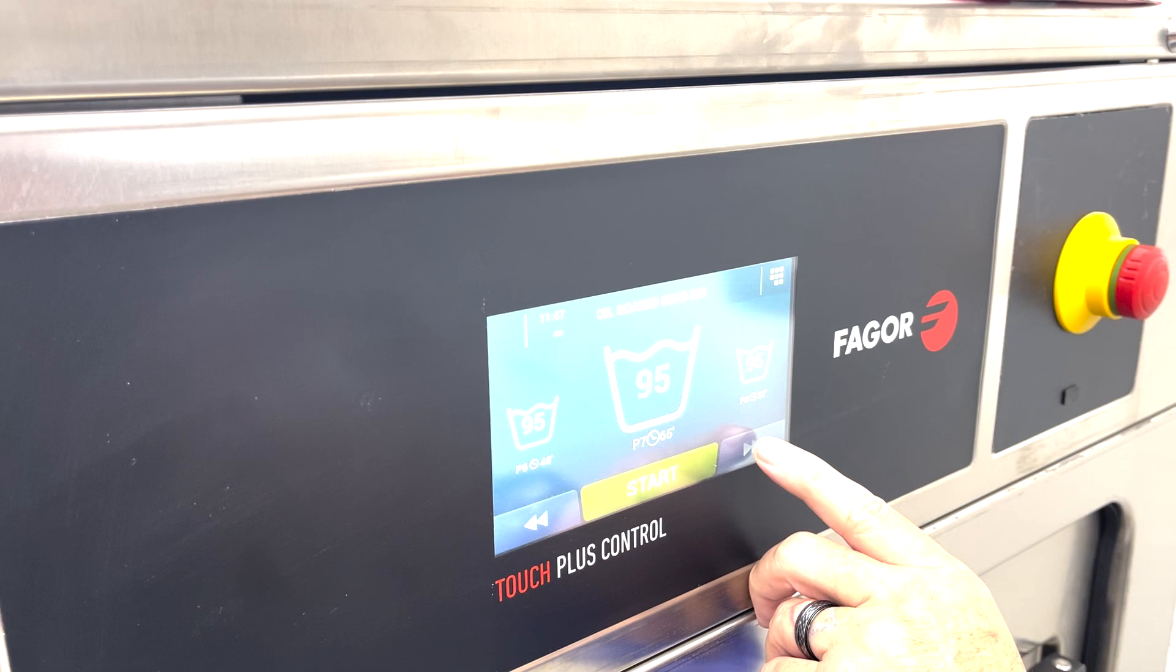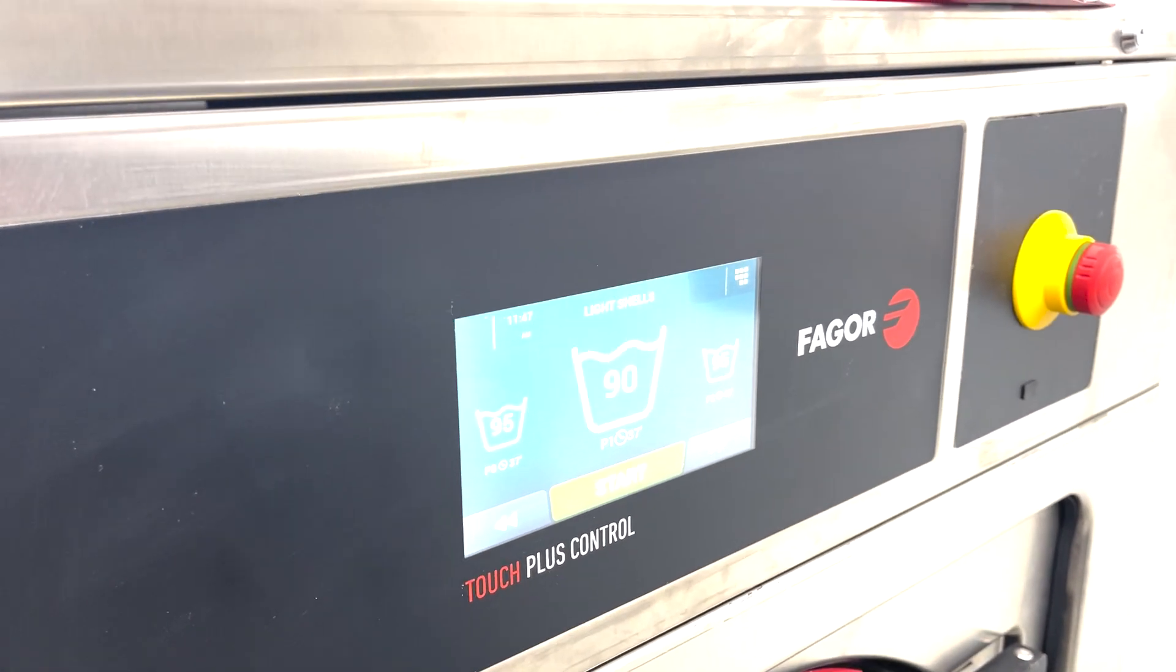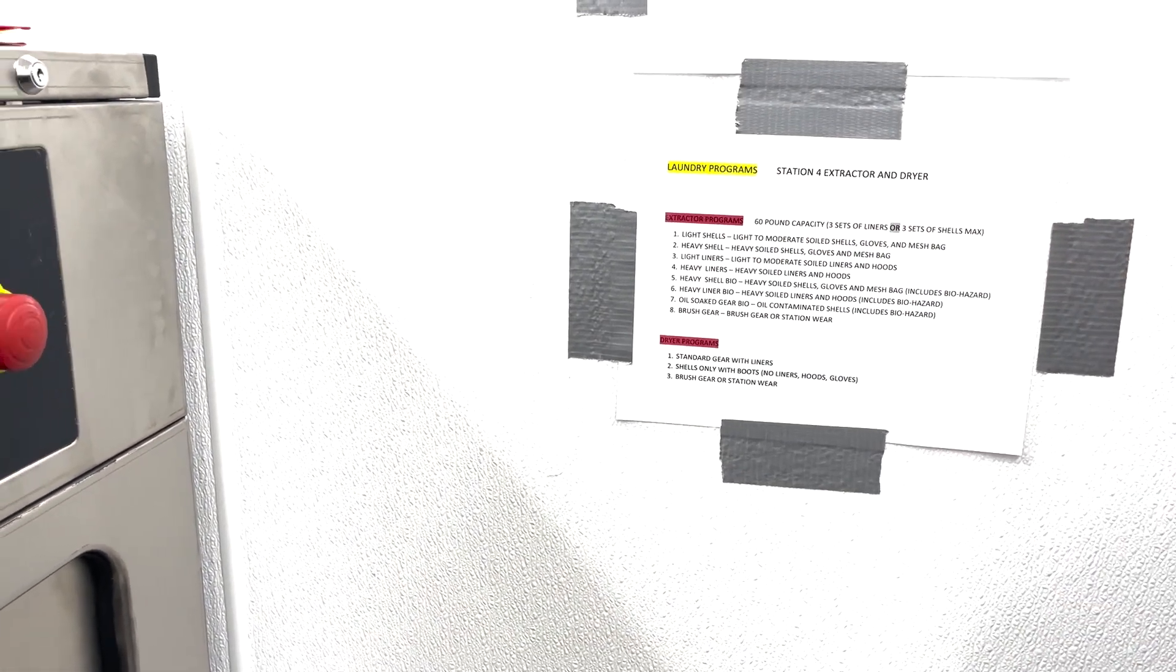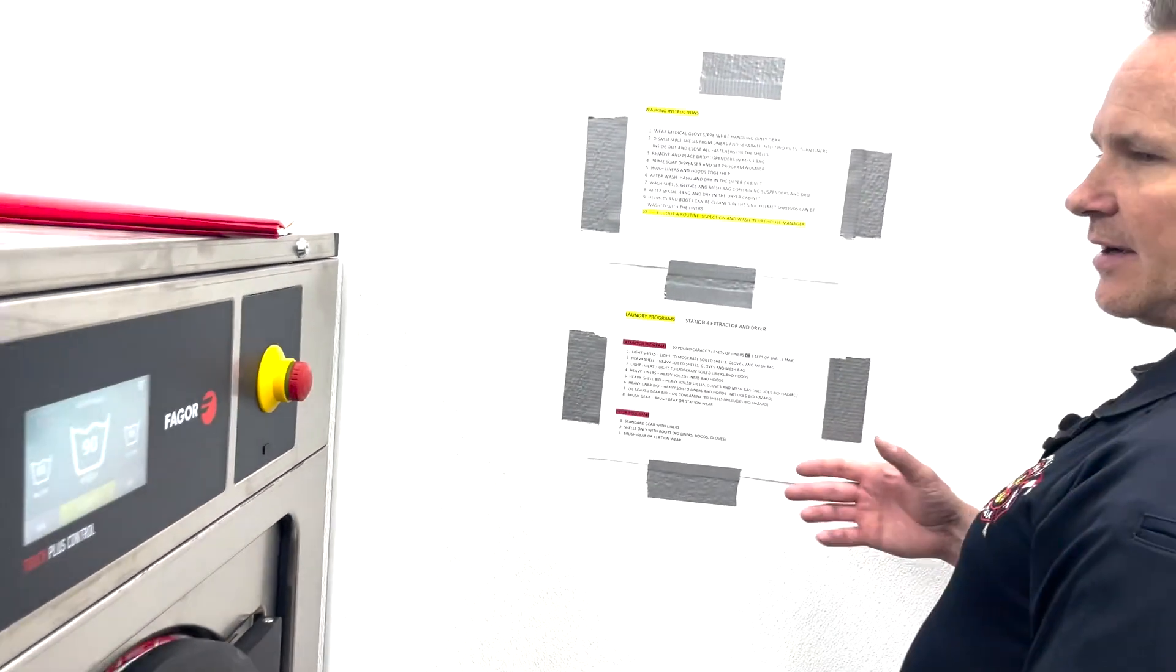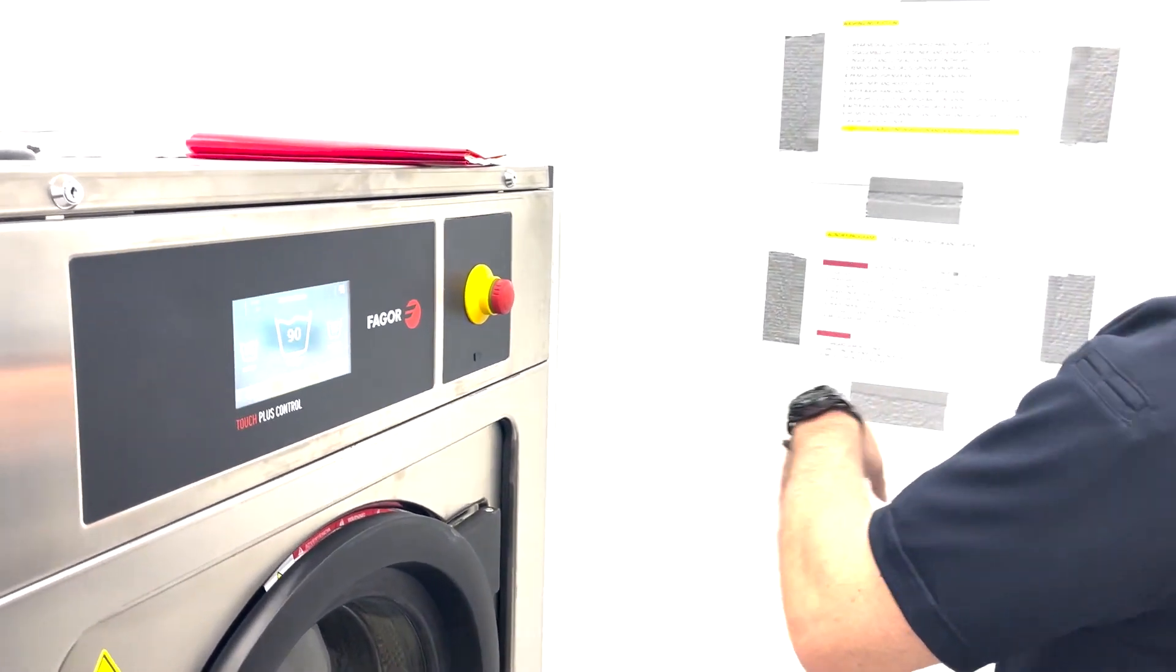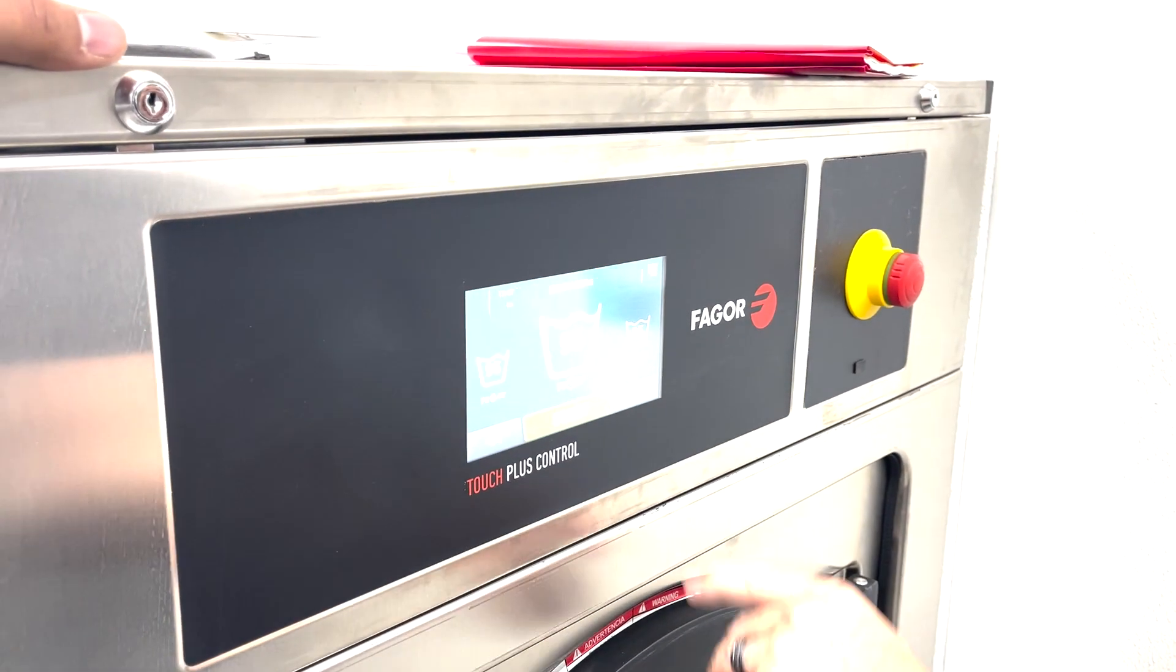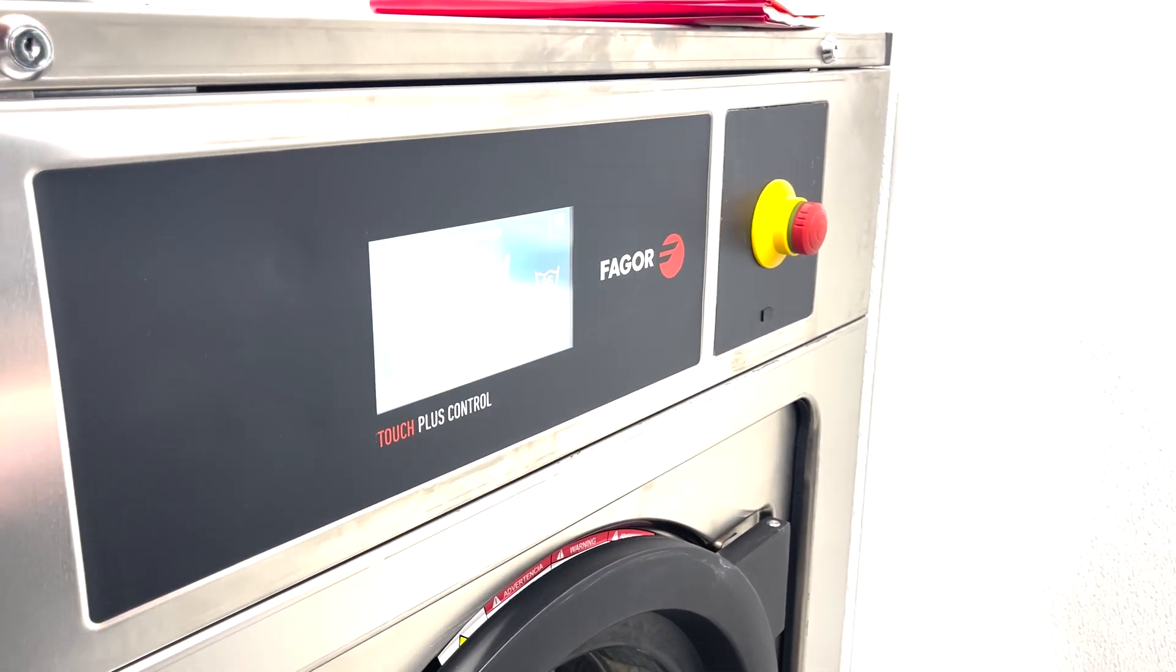There's heavy liners bio, oil-soaked gear, brush gear, and then it goes back to light shells. Your program numbers are listed right here under extractor program. You can wash one set of turnouts or you can wash three sets of turnouts. For right now, these are just liners, so this is light liners, program three. That's our program, but before we hit start, the first thing we have to do is prime our soap.